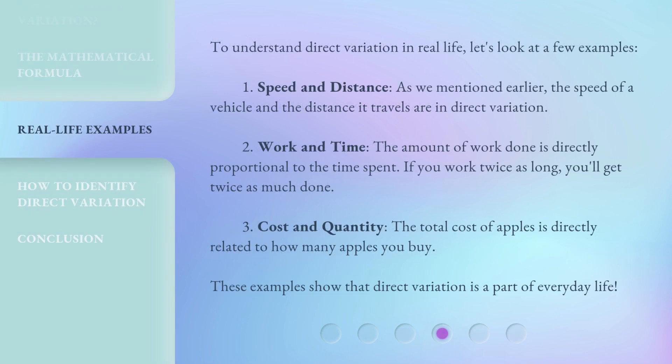To understand direct variation in real life, let's look at a few examples. 1. Speed and distance: As we mentioned earlier, the speed of a vehicle and the distance it travels are in direct variation. 2. Work and time: The amount of work done is directly proportional to the time spent. If you work twice as long, you'll get twice as much done. 3. Cost and quantity: The total cost of apples is directly related to how many apples you buy. These examples show that direct variation is a part of everyday life.